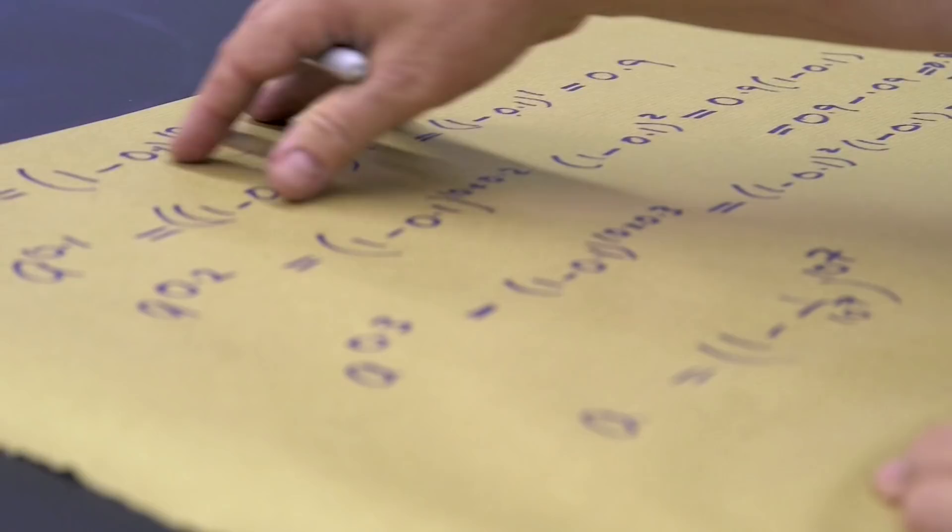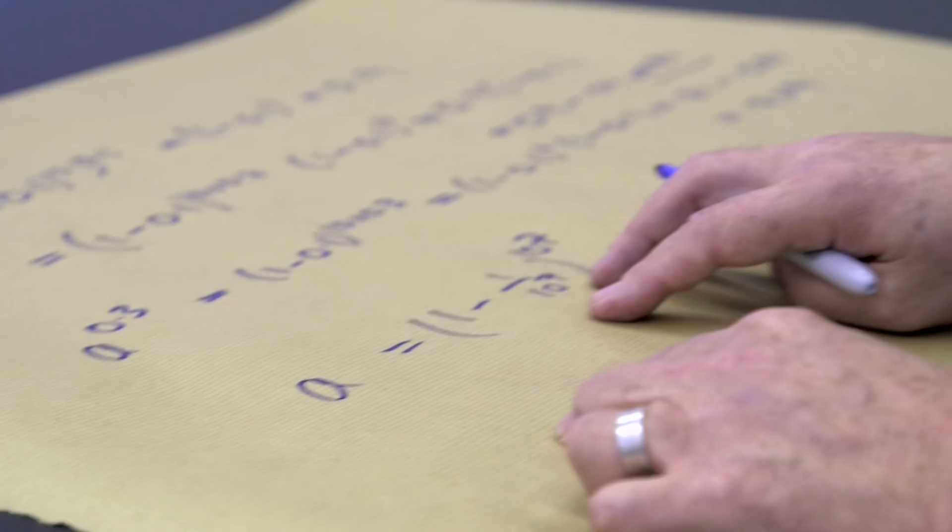Those tables you were using as a boy in school were base 10. What's going on here? Oh, there was a man called Briggs who worked out that if you calculated it to the base e or to this base, you could convert it to base 10. And that sold the product much more easily because people are used to dealing with base 10.